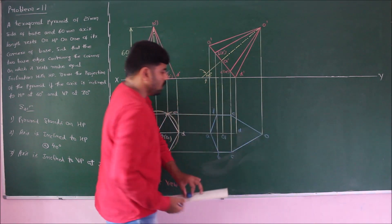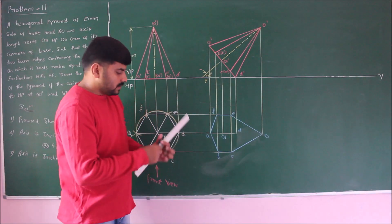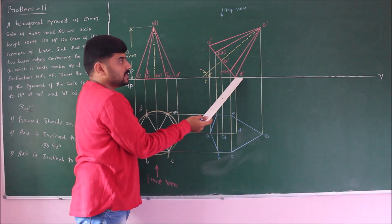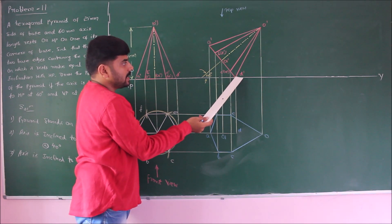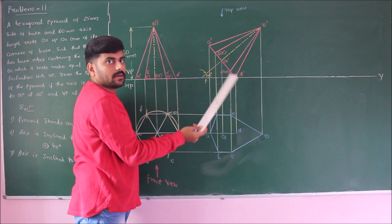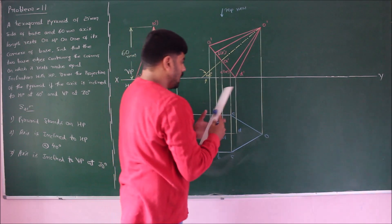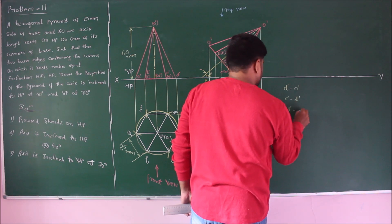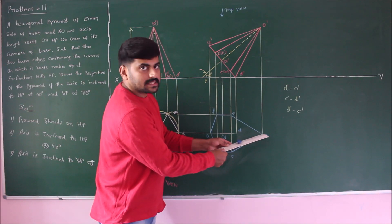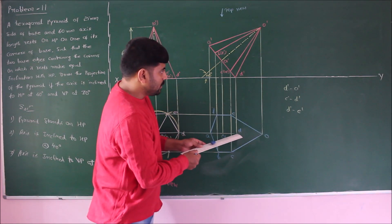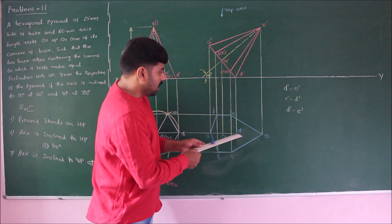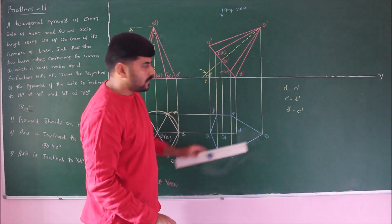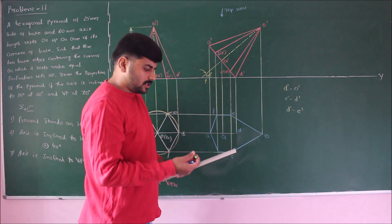The boundary continues c to o, completing the boundary of the pyramid. In the top view, the observer is positioned such that the farthest corner is d prime. All edges emerging from d prime are invisible unless they lie on the boundary. The edges from d prime are: d prime to o prime, d prime to c prime, and d prime to e prime. None of these lie on the boundary, so all three are marked as invisible edges.